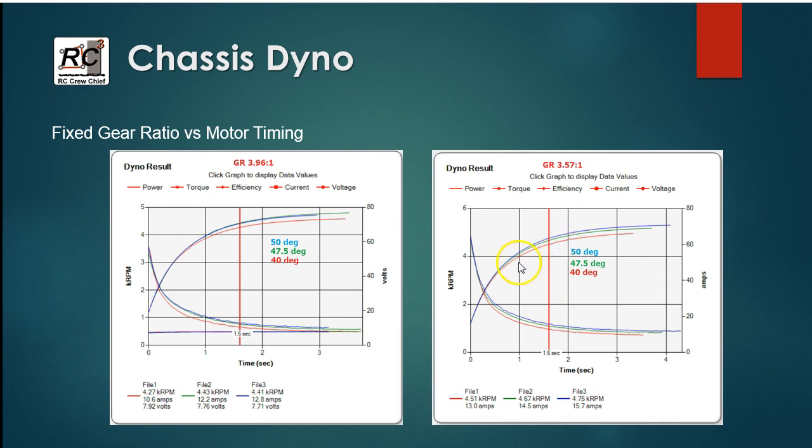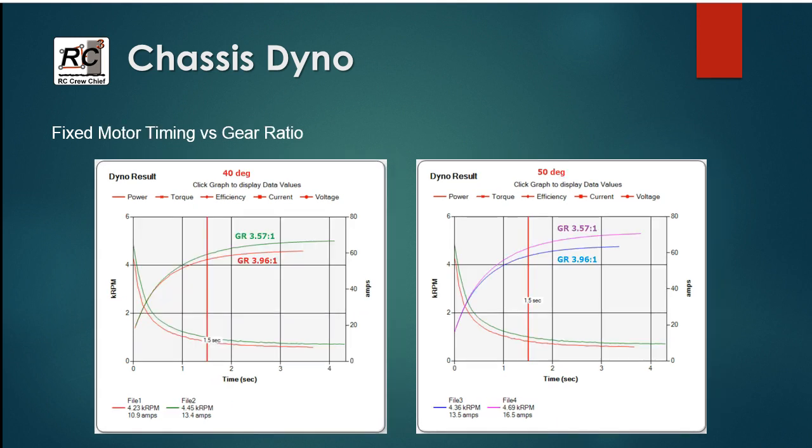So we picked up quite a bit of current draw, but we also picked up speed and acceleration. Now the other thing that's noteworthy here is that you can see at the bottom end of these curves they all pretty much overlay each other almost exactly. So you're not really getting huge quantities of increased acceleration at the bottom end of the curve. Where you are seeing the improvement is up at the higher end, where you're getting more speed and better acceleration.